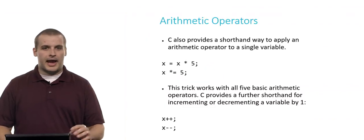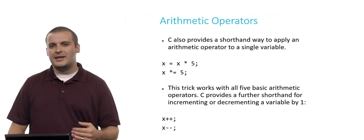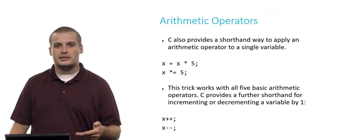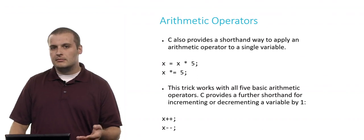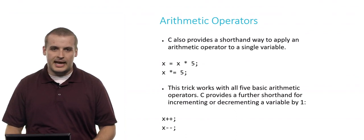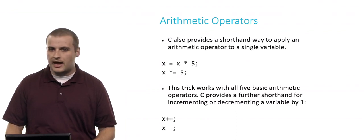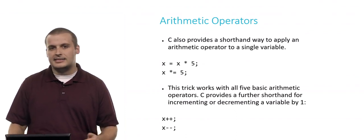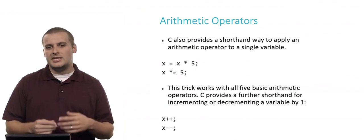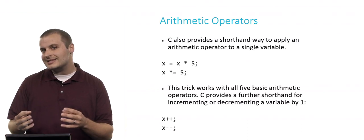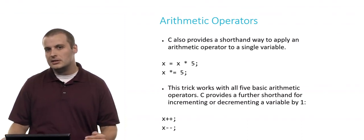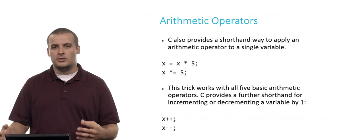So C also gives us a way to apply an arithmetic operator to a single variable in a little more shorthand way. On the previous slide, we saw x equals x times 5. That worked. x times 5 then gets stored back in x. There's a shorter way to do it, though, the syntax x times equals 5. It's the same exact thing as saying x equals x times 5. It's just a slightly shorter way to do it. And when you see some distribution code or sample code that does things like this, just be familiar with what this syntax means. You certainly don't have to use it.